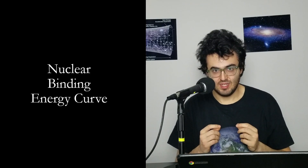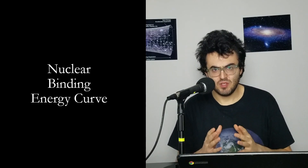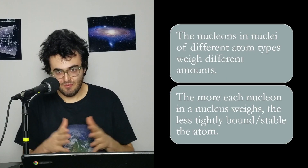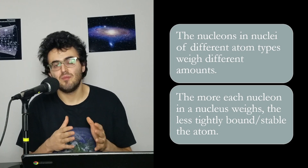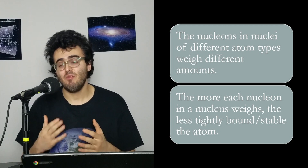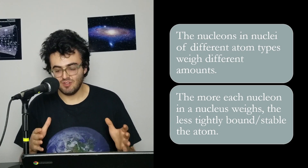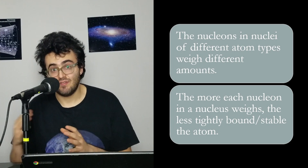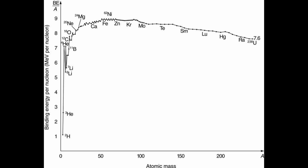To understand how this is possible, let's turn to the nuclear binding energy curve. There is an inverse relationship between the net mass-energy of a nucleon within a nucleus and the strength of the bond those nucleons have with each other. Every atom has nucleons — protons and neutrons — and each has a mass energy. As we move from hydrogen to around iron, the average weight of each nucleon progressively decreases and the bond gets stronger.